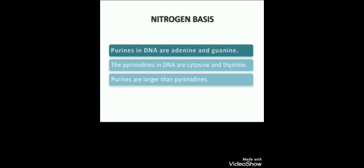Before starting, I'd like to share some words of Richard Dawkins: 'DNA neither cares nor knows. DNA just is, and we dance to its music.' This simply means that whatever we are, it's all because of DNA. Moving to our first slide about nitrogen bases: there are two types — purines and pyrimidines. Purines in DNA consist of adenine and guanine, whereas pyrimidines consist of cytosine and thymine. Purines are larger than pyrimidines.